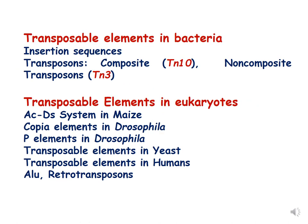Transposable elements present in bacteria are IS elements, which are called insertion sequences, and transposons. Transposons in bacteria can be composite or non-composite. An example of a composite transposon is Tn10, and a non-composite example is Tn3.